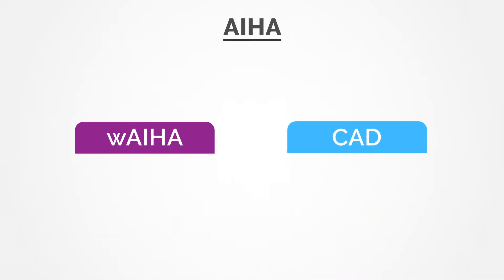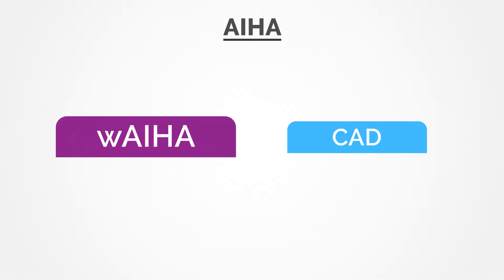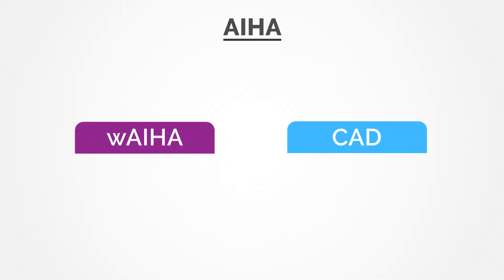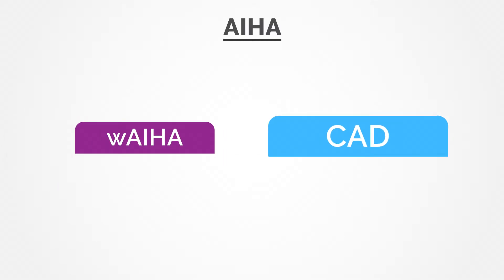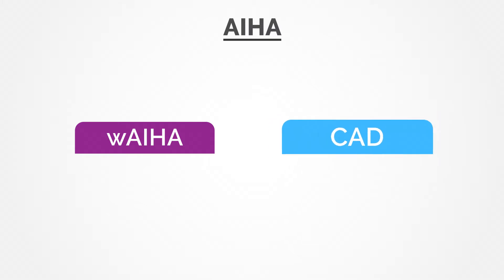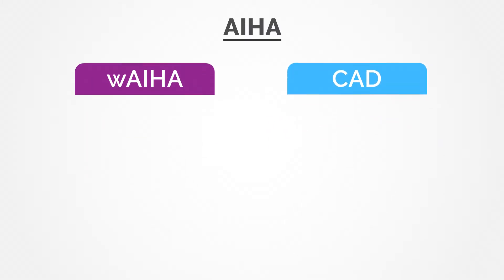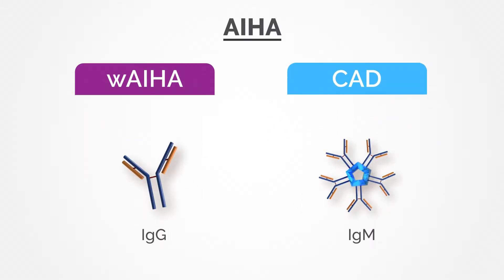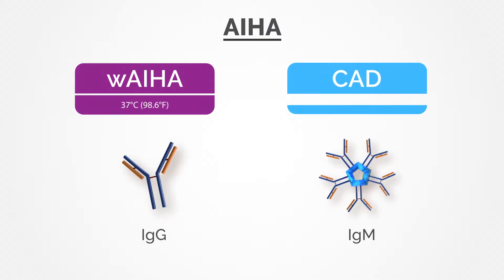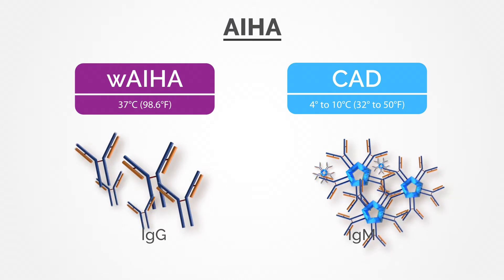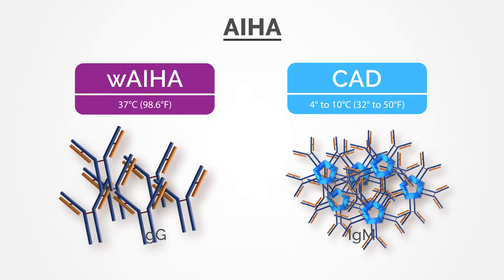Most cases are classified as either warm antibody AIHA (WAIHA) or cold agglutinin disease (CAD). The key differences are the types of autoantibodies involved and the temperature at which these autoantibodies are active.